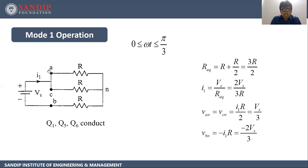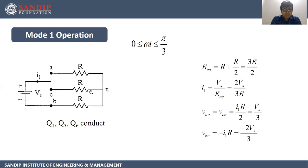Van is the voltage at node A to neutral. The current i1 flows in and divides into two parts, so Van = i1 × R/2. Substituting i1 = 2Vs/3R, the R cancels and we get Van = Vs/3. Similarly, Vcn = Vs/3. Vbn equals minus i1 × R, because the same current flows through phase B to the negative terminal with no division, giving Vbn = −2Vs/3.